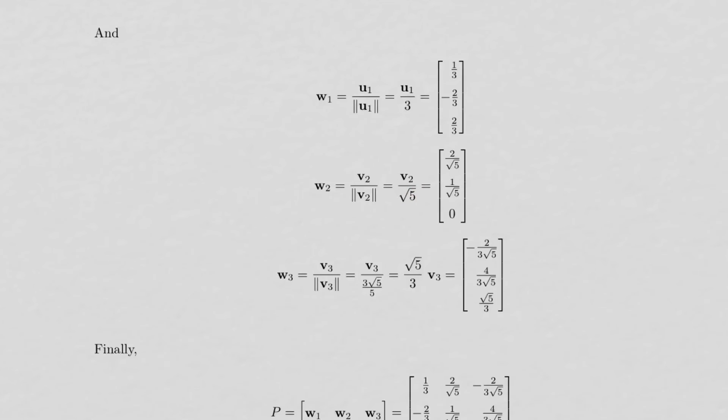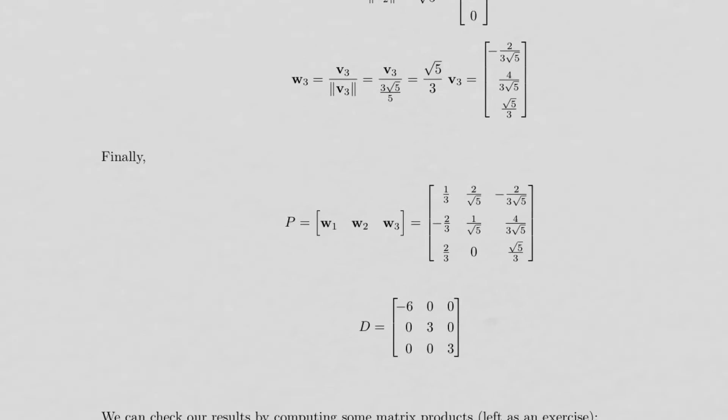The norm of U1 is 3, the norm of V2 is 5, and the norm of V3 is 3 root 5 over 5. And we divide each of the corresponding eigenvectors by the norm. We get these vectors. So this set, these three vectors, is our orthonormal set of eigenvectors.